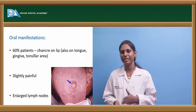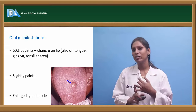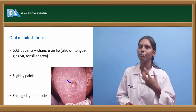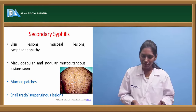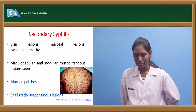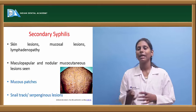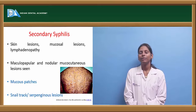Chancres are highly contagious and typically present on the penis, but oral manifestations occur in about 60% of patients — on the lip, tongue, gingiva, or tonsillar area — where they are slightly painful. Large lymph nodes can be seen in the associated region. Patients with primary syphilis may also have fever and symmetrical maculopapular rash. Secondary syphilis is characterized by skin and mucosal maculopapular and nodular lesions with lymphadenopathy.